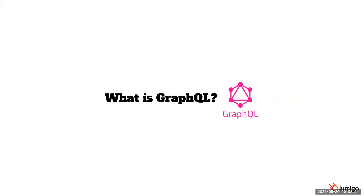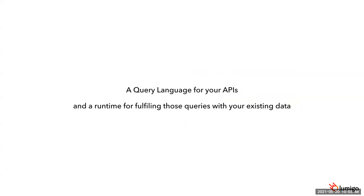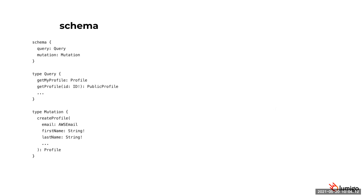I want to start with what GraphQL is and how it's different from REST APIs. GraphQL, as the name suggests, is a query language for your APIs that lets you describe what data you have and what you can do with that data. It also needs a runtime that can take a query written in this query language and fulfill it with the data in your system. Every GraphQL API has a schema that defines what query and mutation operations your API supports — queries are for reading data and mutations are for updating them.